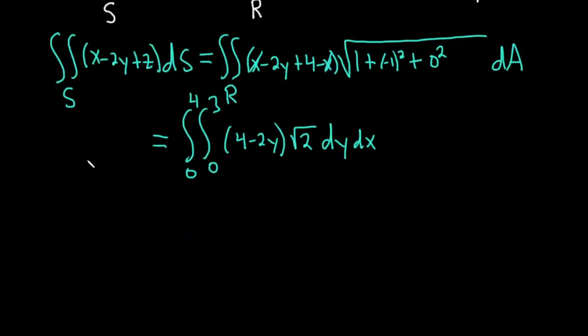All right, so this is equal to... Let's go ahead and integrate with respect to y. So we're going from 0 to 4. And now let's integrate this with respect to y. So it'll be 4y, and then integrating the 2y, you add 1 and divide. So it'll be minus 2y squared over 2, so the 2's cancel. So you just get minus y squared. And we're going from y equals 0 to y equals 3, and we still have our dx here on the outside.